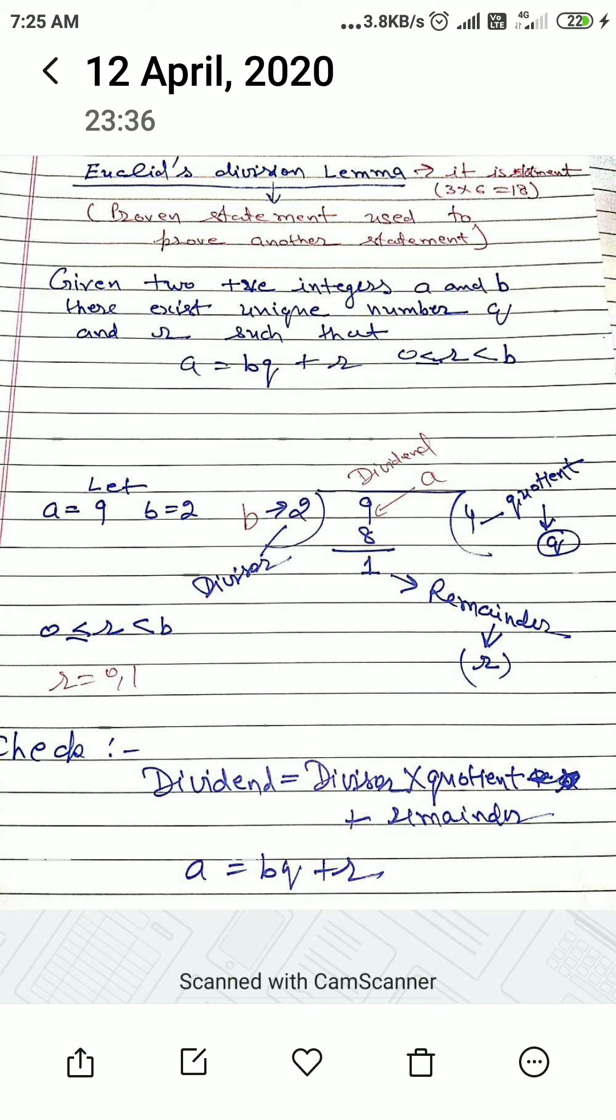Now, Euclid's division lemma. Lemma means proven statement which is used to prove another statement. This is used in finding HCF.